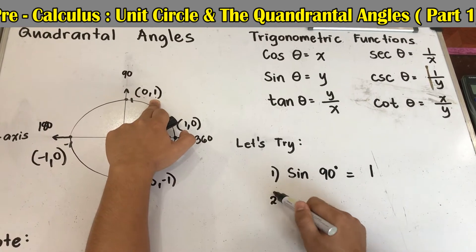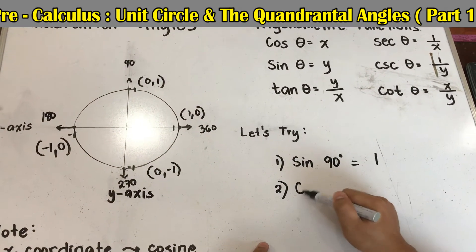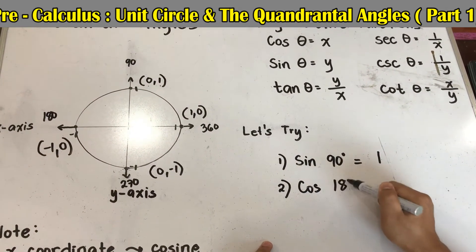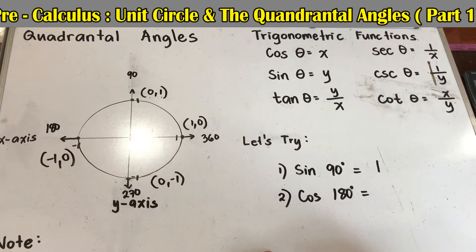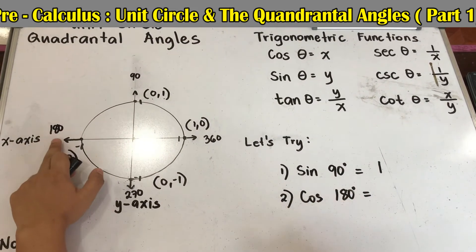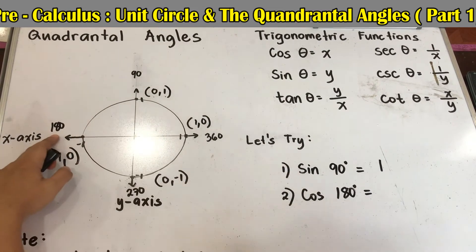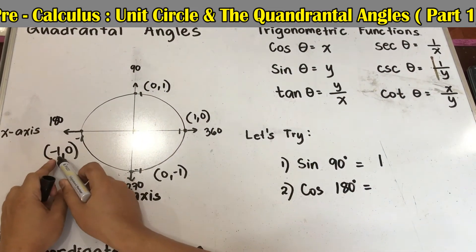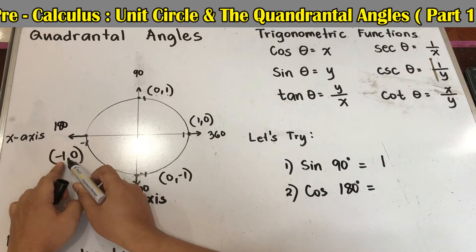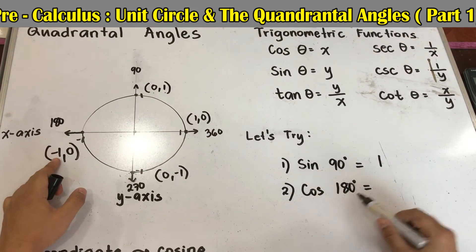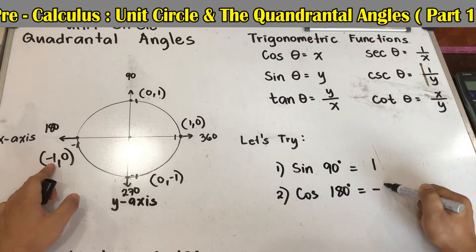Number 2, cosine 180 degrees. So where is 180? Here. Then cosine is for the value of x. So negative 1 is the value of x. So that means cosine 180 is equal to negative 1.